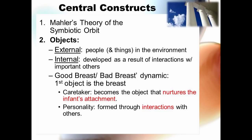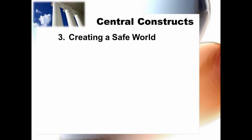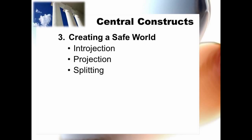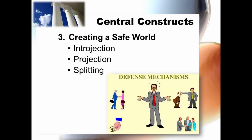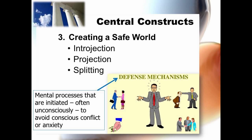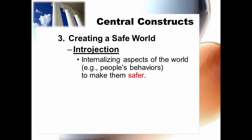The third and final central construct is creating a safe world, which we accomplish through introjection, projection, and splitting. These three constructs can also be thought of as defense mechanisms — mental processes that are initiated, often unconsciously, to avoid conscious conflict or anxiety. Introjection is internalizing aspects of the world, such as people's behaviors, to make them safer. For example, we might internalize Lincoln's qualities of character, or imagine that we are superheroes, in order to internally make the world a safe place for us.